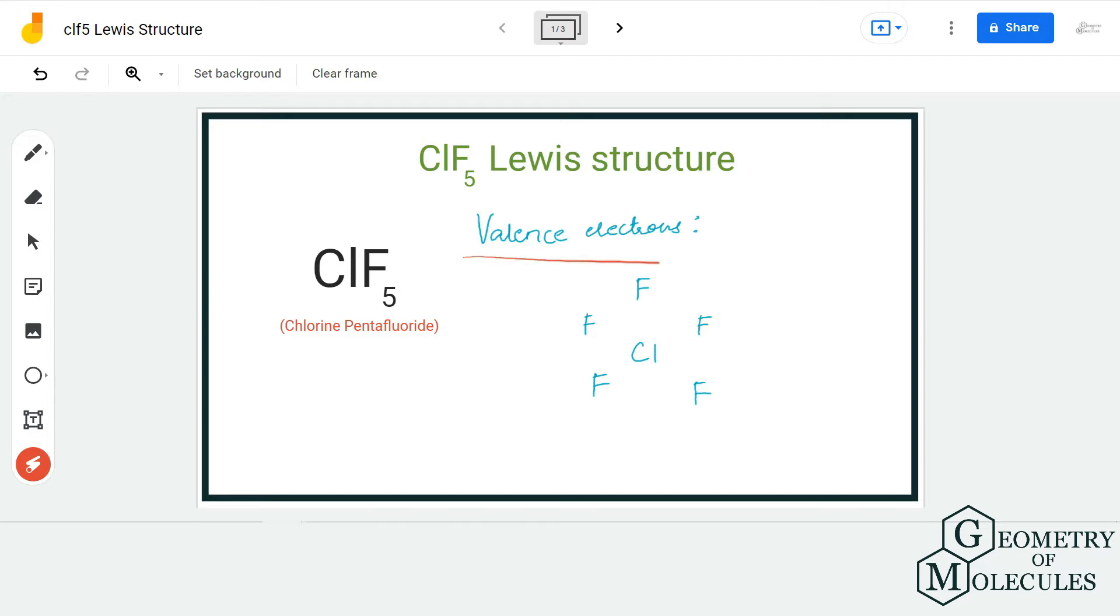Here we have one atom of chlorine and five atoms of fluorine. Both these atoms have seven valence electrons in their outer shell and it results in a total of 42 valence electrons for this molecule.